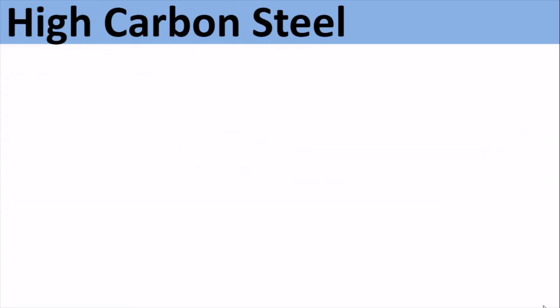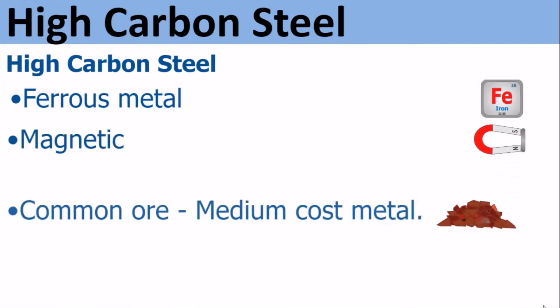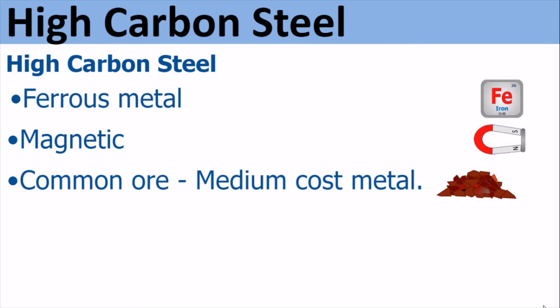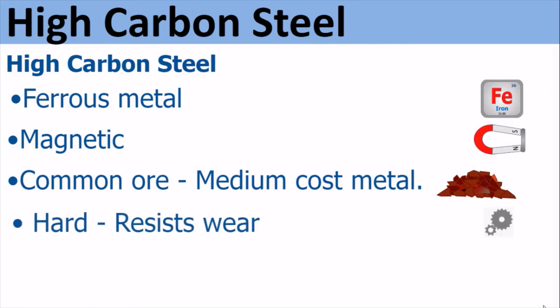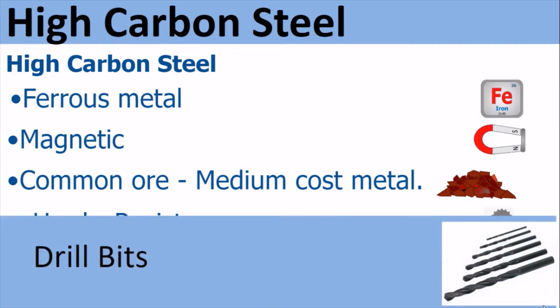High carbon steel. High carbon steel is a ferrous metal. It is magnetic and is a common ore, so it's a medium cost metal. It's very hard, so it resists wear, but it does need to be protected from corrosion. Because it is hard and resists wear, it is often used for drill bits.